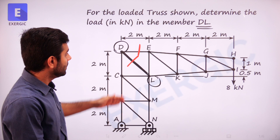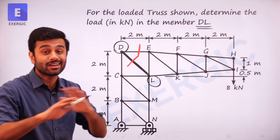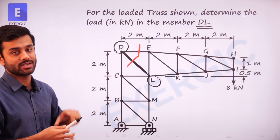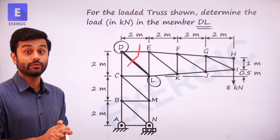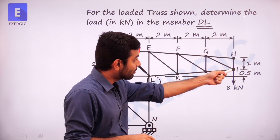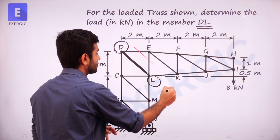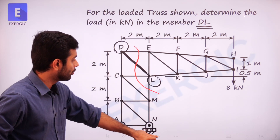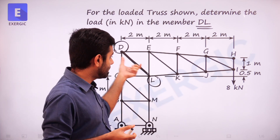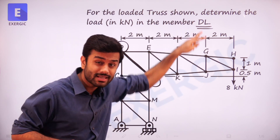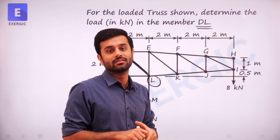So where do you go? If you have to cross DL, in any direction you try, you either end up with more than 3 unknowns or DL itself won't be in the section. So basically, if you try to apply method of section directly, you are not going to get to the answer. Shall we use method of joint from the beginning? Method of joint is too lengthy, and a direct section we are not able to find.